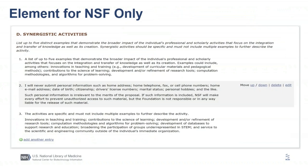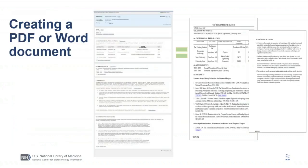Section D for NSF includes Synergistic Activities, which provides a free-text box. Once information is entered, you can hover over the entry to change the position of the text, delete, or edit information. Once you have verified the information and are ready to save or print, PDF links are available on the top and lower right-hand side, as well as XML for all users. NSF users cannot download the Word document. If you find an error, you can go back, make corrections, and re-save or print.